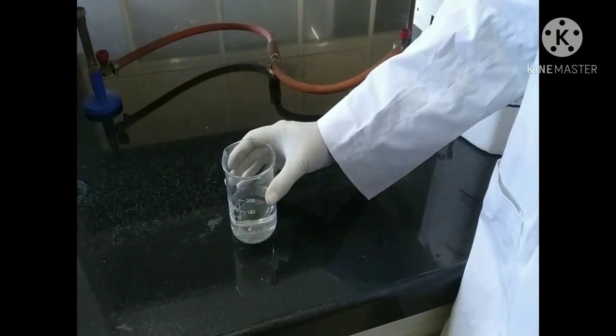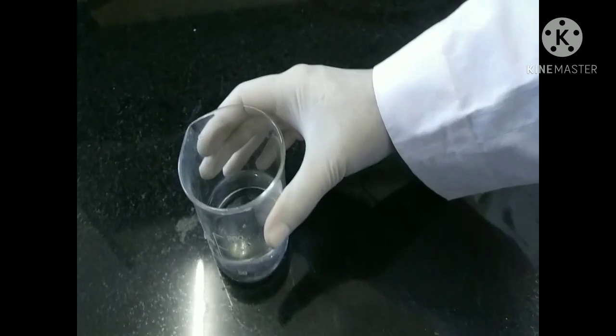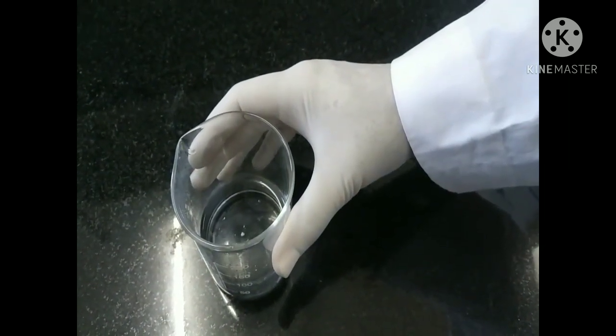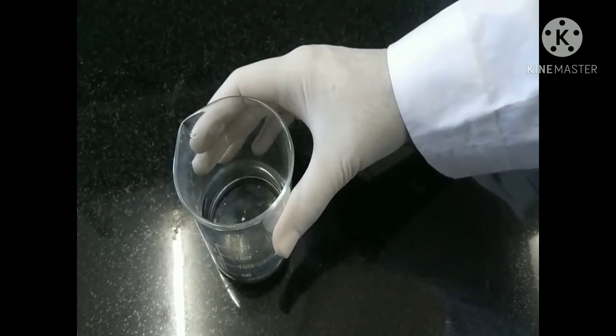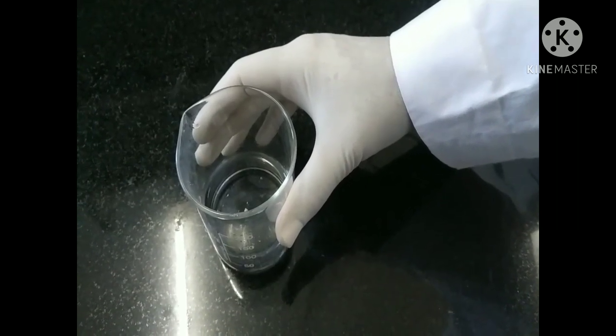So the category of this chloroform water is pharmaceutical aid. Dose will be 15 to 30 ml, and storage, as I told you, is in a closed container of amber colored bottle. Uses are pharmaceutical aid, preservative, vehicle, and as a general anesthetic.